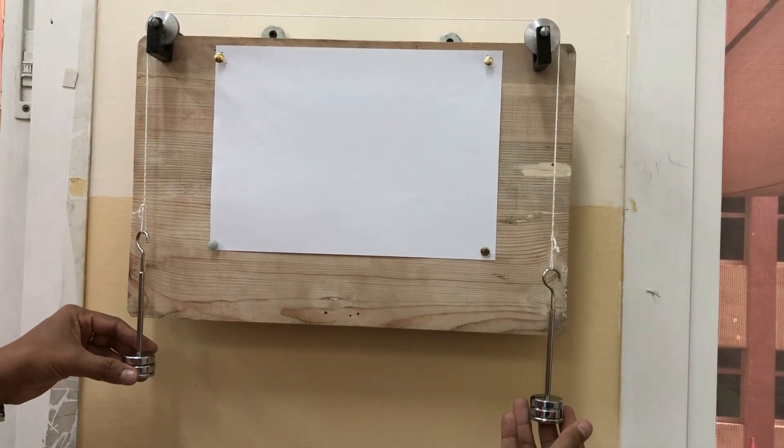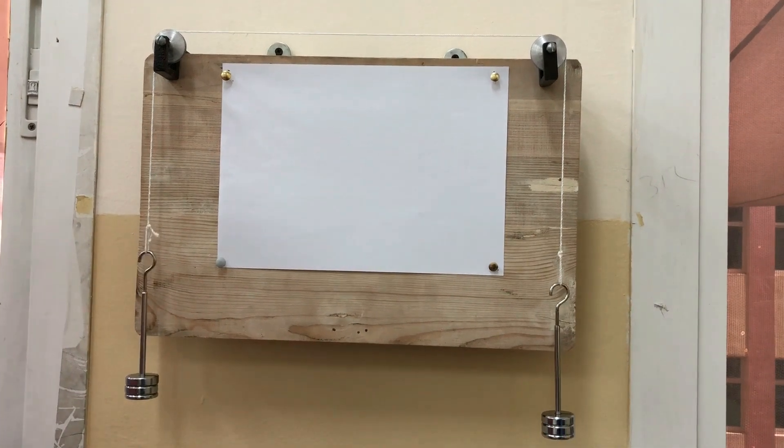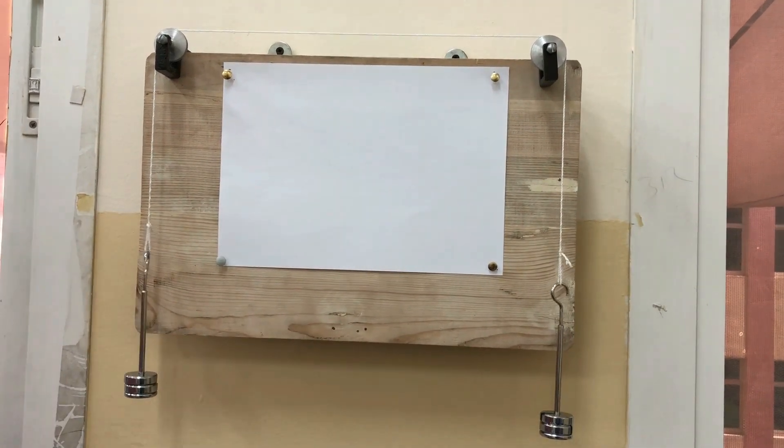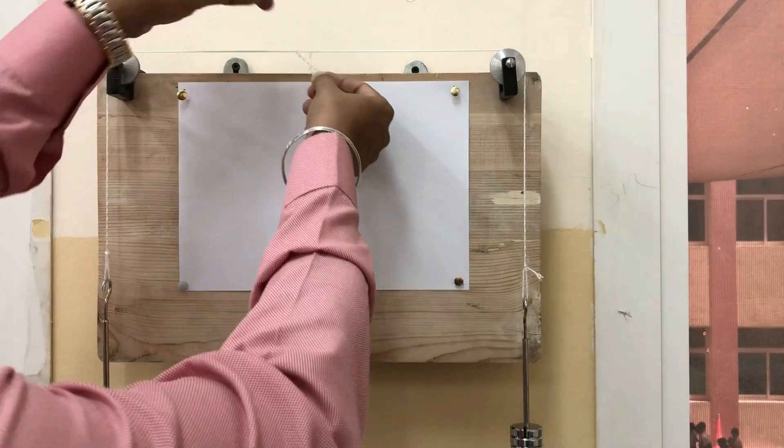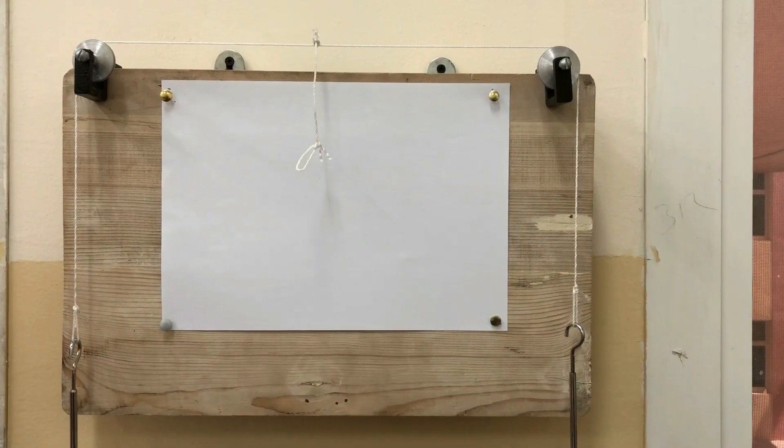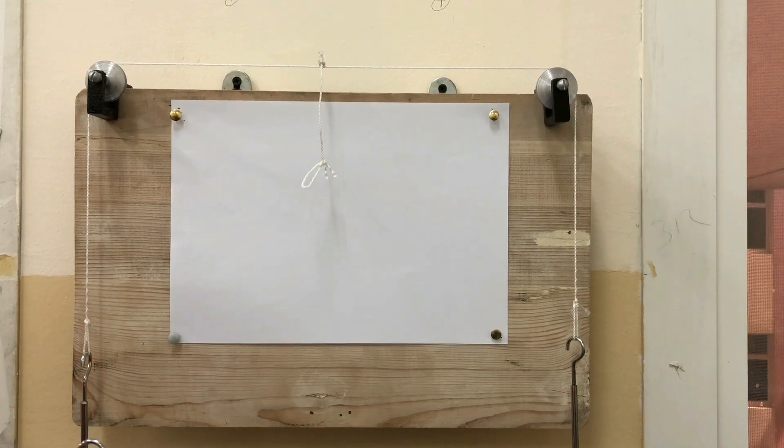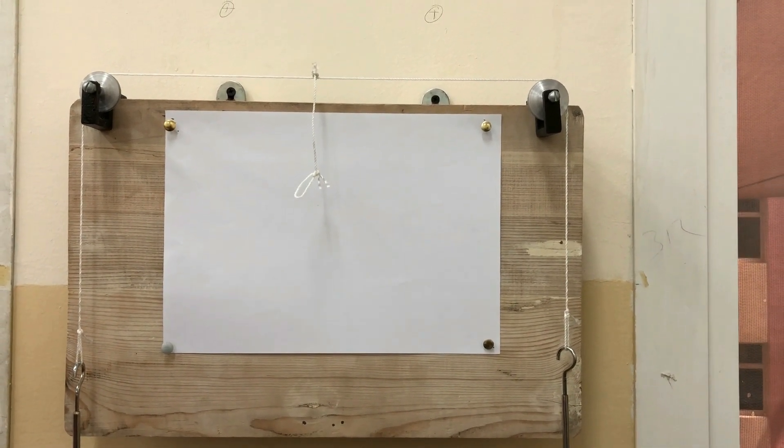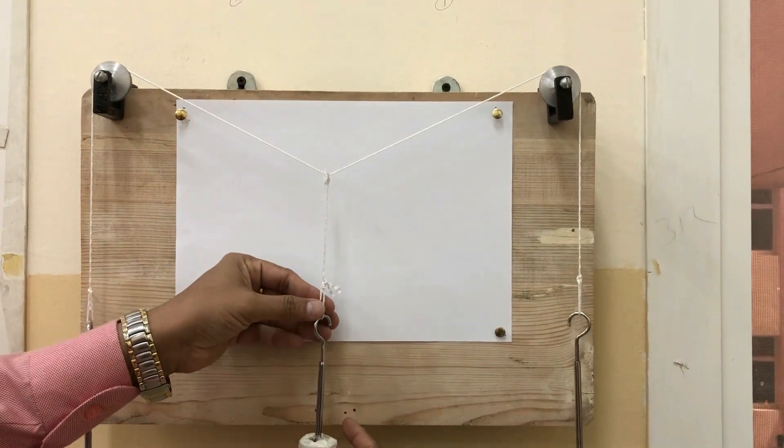So here we have attached around 150 grams. A third string is attached and tied to the middle of this string. An unknown weight is attached to the third string, and you can mark this point as O.